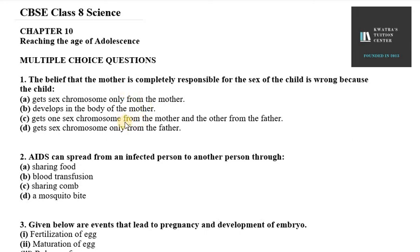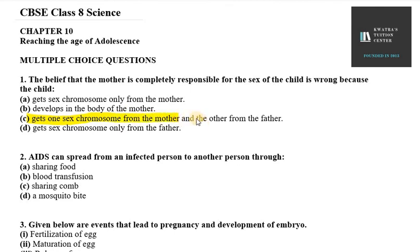The first question is: the belief that the mother is completely responsible for the sex of the child is wrong because the child gets one sex chromosome from the mother and the other from the father. So this is the right option — one sex chromosome from the mother and the other from the father.